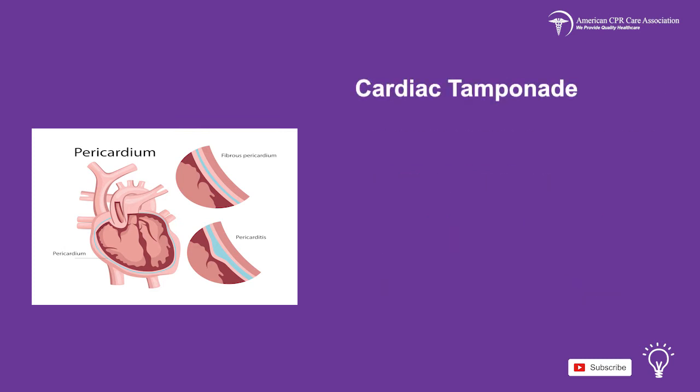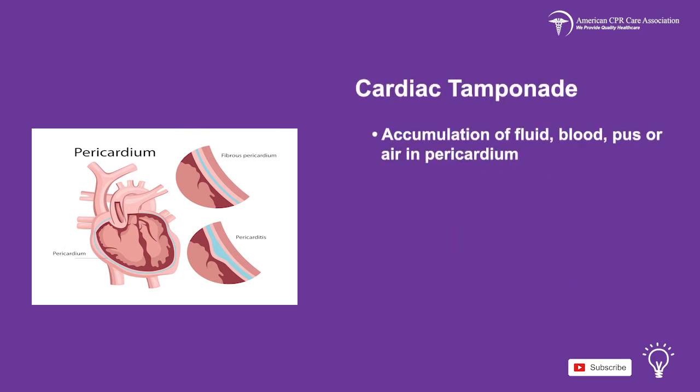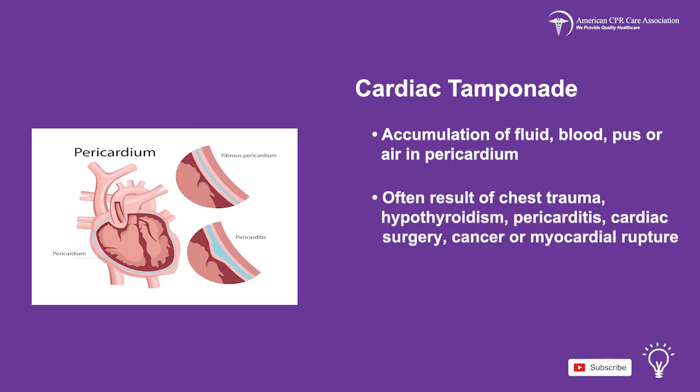Cardiac tamponade occurs when there is accumulation of fluid, blood, pus, or air in the pericardium. This is often the result of chest trauma, hypothyroidism, pericarditis, cardiac surgery, cancer, or myocardial rupture.